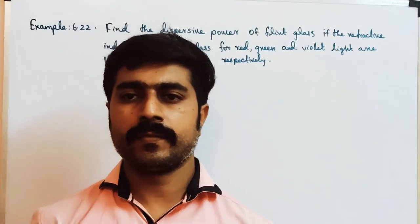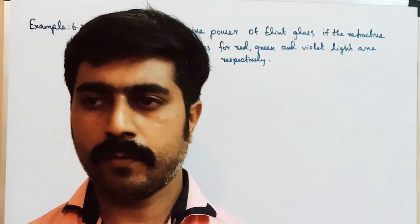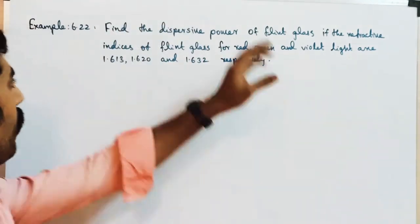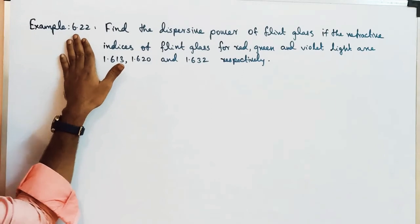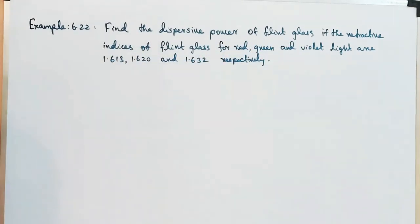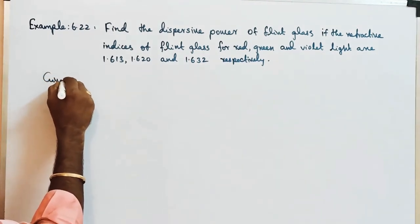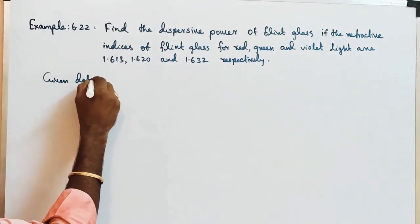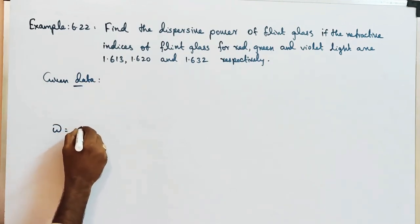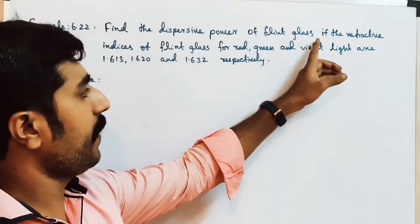Hi students, so in the 6th lesson we came on a 2 mark problem. It is very simple. See example 6.22: Find the Dispersive Power of Flint Glass. What is Dispersive Power? First, given data. Dispersive power is denoted by the letter omega.